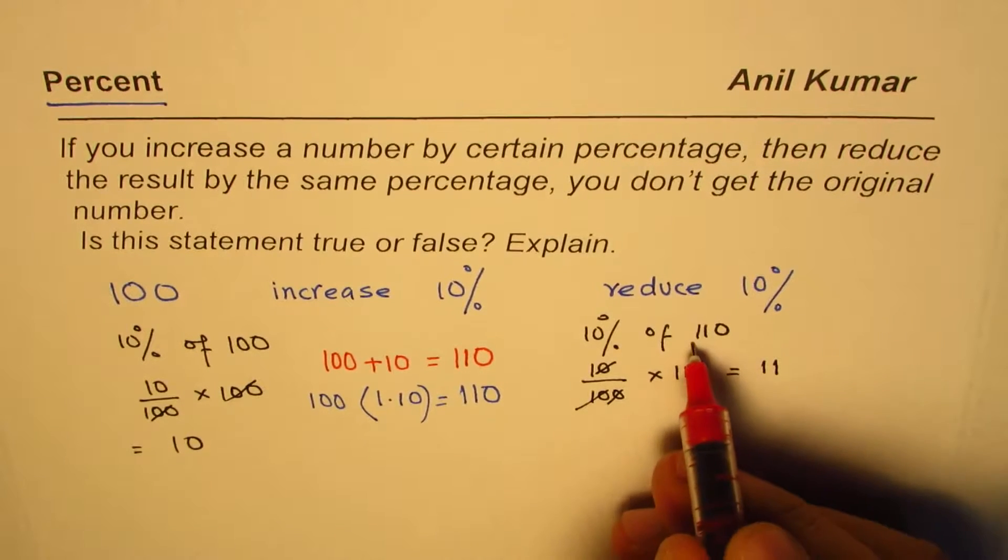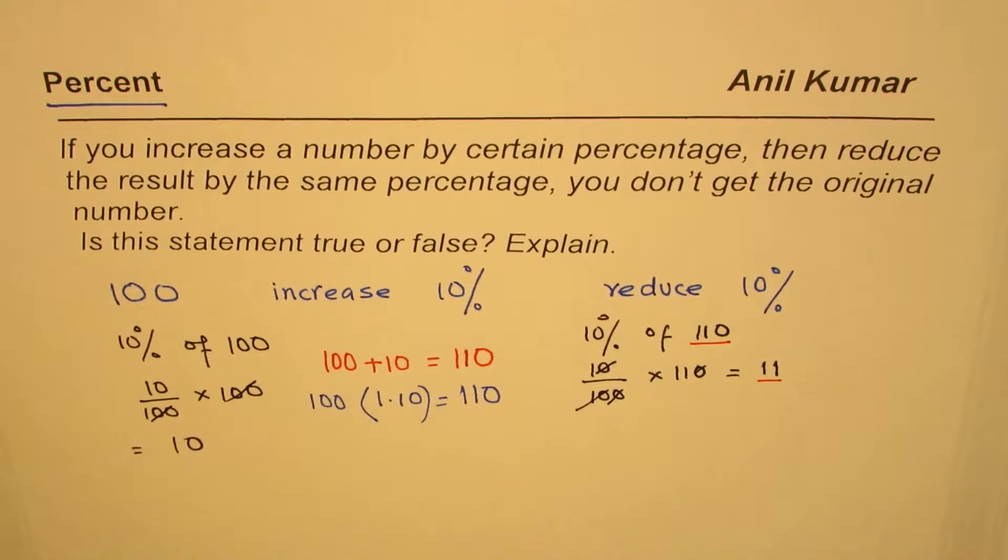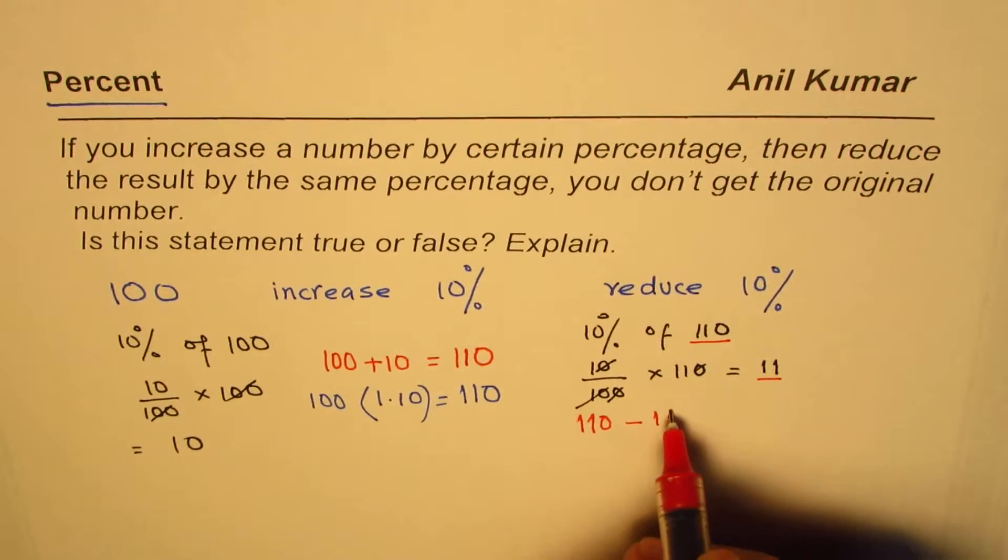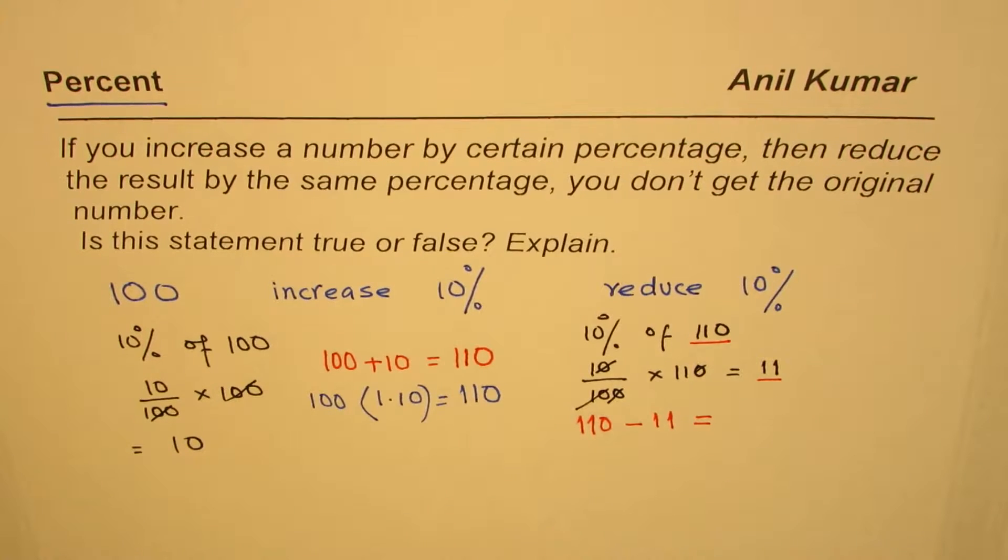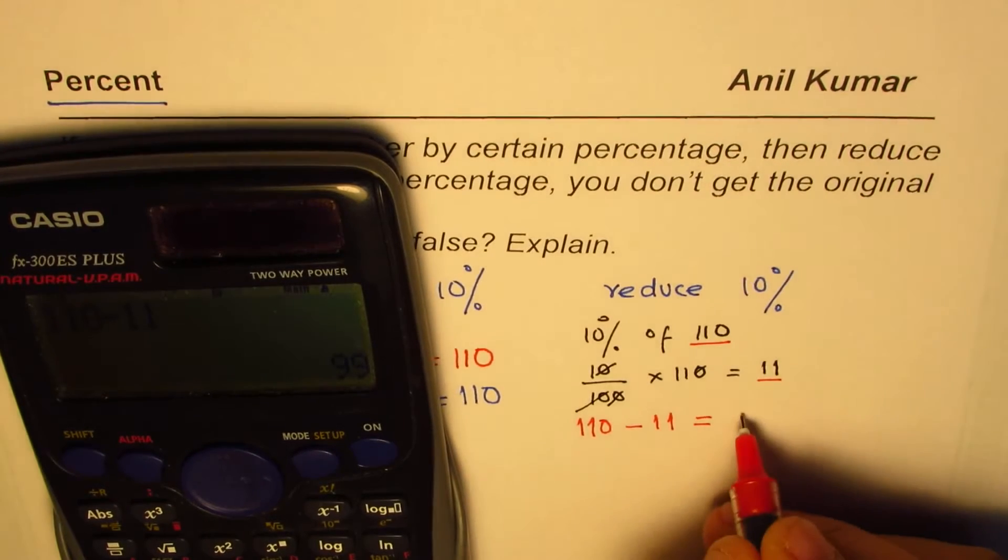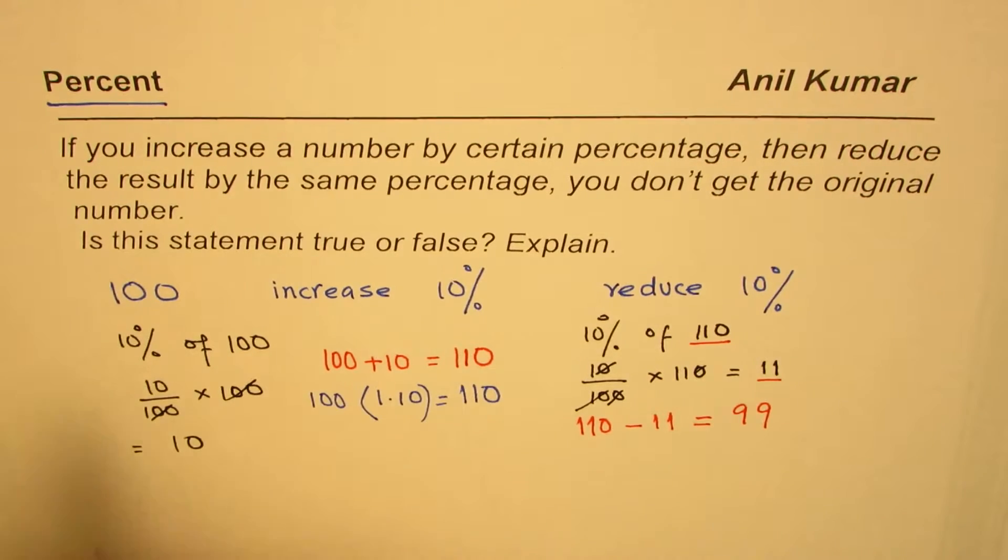In this case we have to reduce, meaning take away from the original number. The original number is 110, we have to reduce 11. So let's write it down: 110 minus 11. Let's use the calculator to ensure we're getting the right result—it gives me 99. It is one less than what we started with.